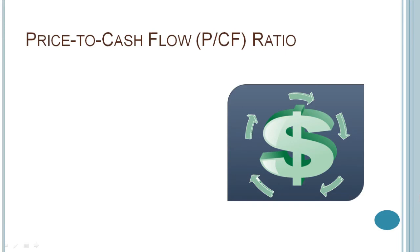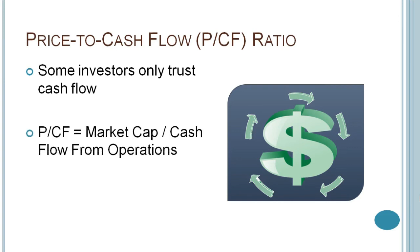Now the last metric we'll look at is the price to cash flow ratio. Some investors don't like to use net income because it's an accounting number, which can be manipulated. As a result, they like to solely focus on cash flow instead. Price to cash flow measures how much investors are paying for a business relative to the cash flow that it generates. So it's basically the market capitalization divided by cash flow from operations. For example, a price to cash flow ratio of 16 means investors are paying $16 for every dollar of cash flow that the business generates.